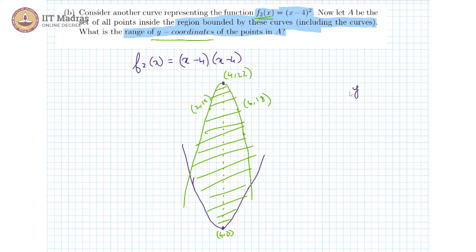So y coordinates in our region range between 0 and 22, and they said including the curve. So 0 is also included, 22 is also included. So we can write the same thing as y belongs to the closed interval 0 comma 22.